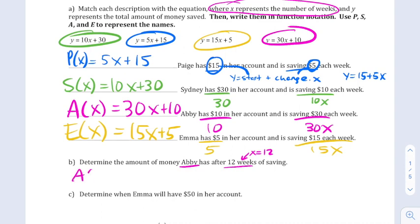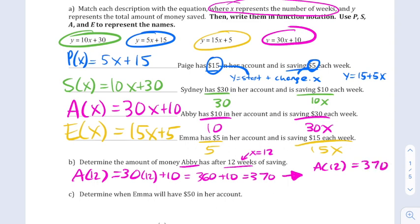Well, if a of x equals 30x plus 10, we're going to replace the x's with 12. So a of 12 equals 30 times 12 plus 10, which equals 360 plus 10, which equals 370. So a of 12 equals 370, meaning she has $370 after the 12 weeks.